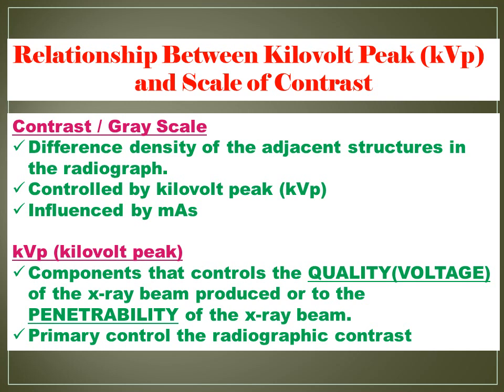KVP, or kilovolt peak, is the component that controls the quality or voltage of the X-ray beam produced, or the penetrability of the X-ray beam. It is the primary control of radiographic contrast.